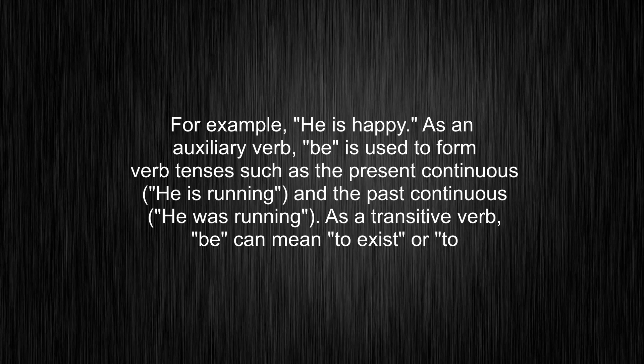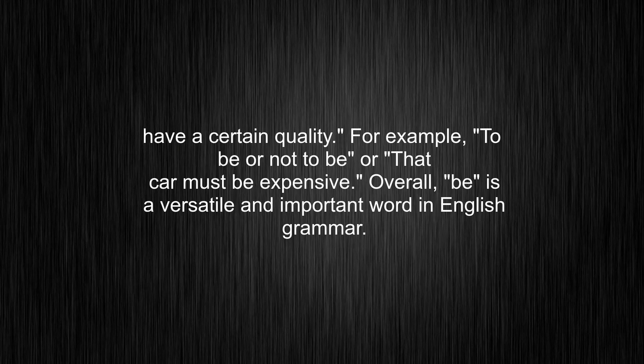As an auxiliary verb, 'be' is used to form verb tenses such as the present continuous — 'he is running' — and the past continuous — 'he was running.' As a transitive verb, 'be' can mean to exist or to have a certain quality. For example, 'to be or not to be,' or 'that car must be expensive.'